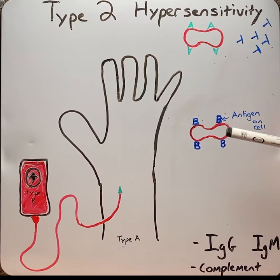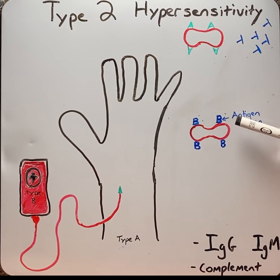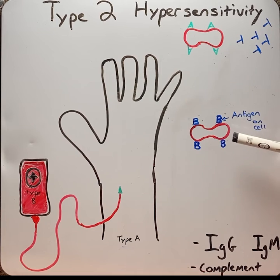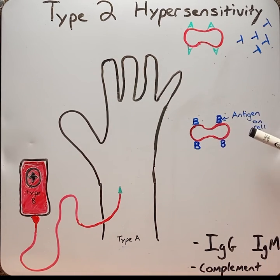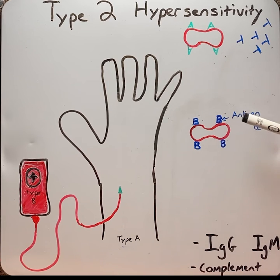An example of an intrinsic antigen is type 4 collagen, which can be found in the kidney or lung. When it is destroyed by a type 2 hypersensitivity reaction, it leads to a condition known as Goodpasture syndrome.